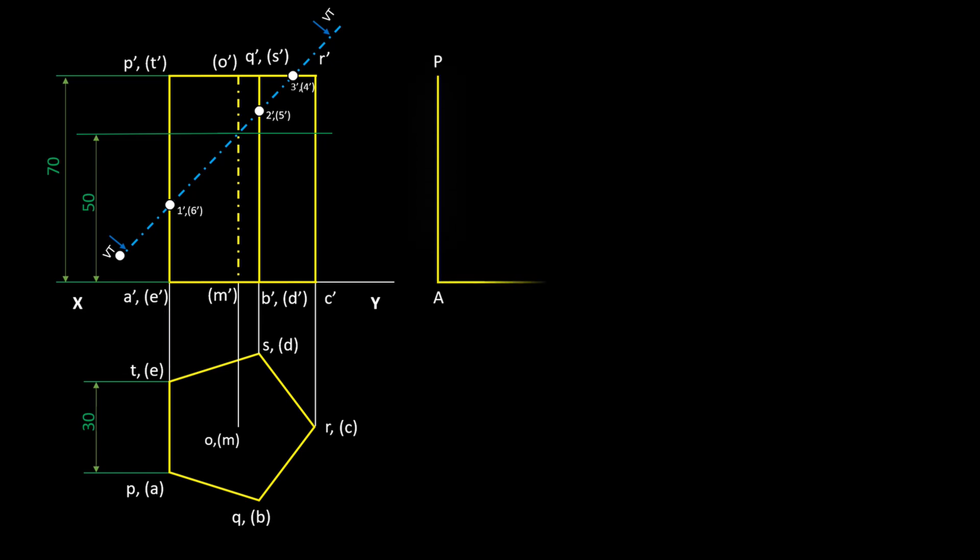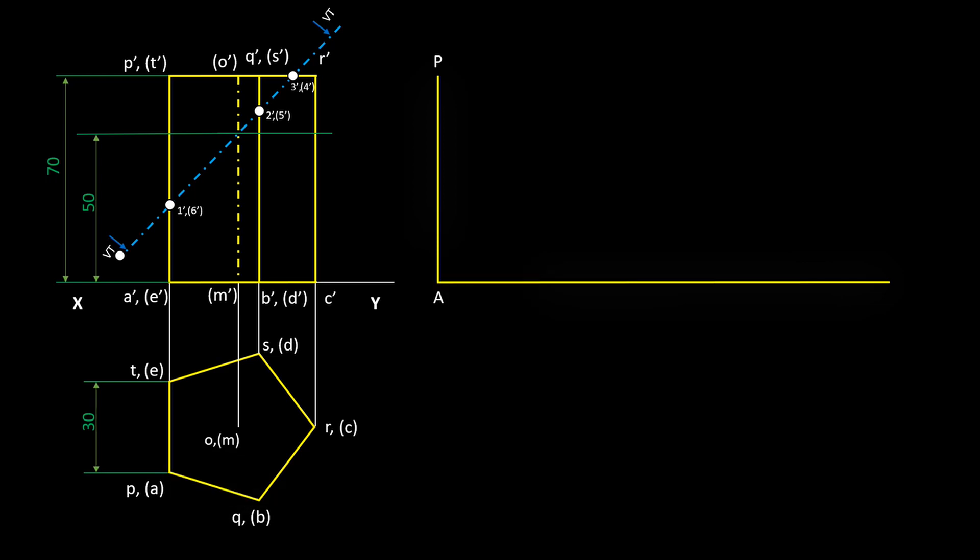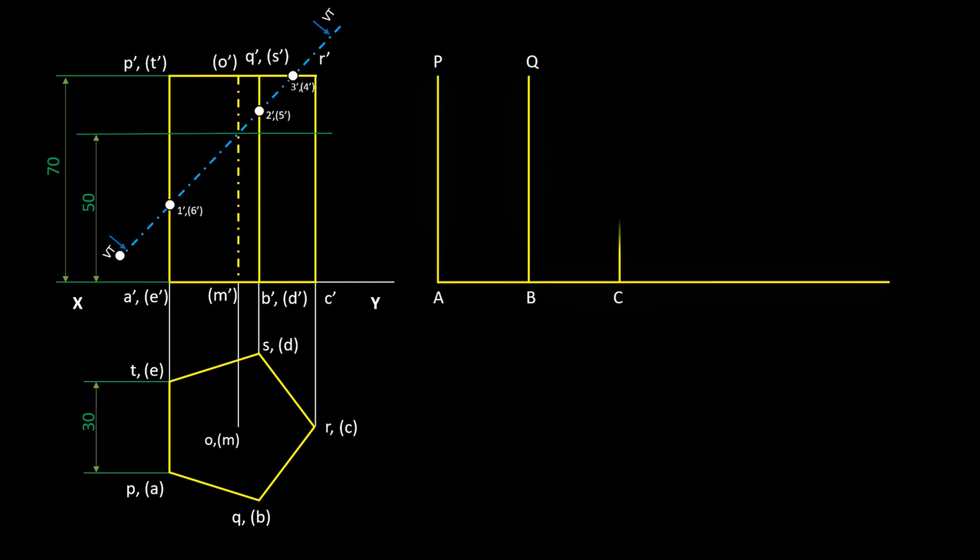Next vertical edge will be BQ. We can get the true length 30mm of AB from the top view. And complete the vertical edge BQ. Draw the remaining vertical edges 30mm equally spaced.